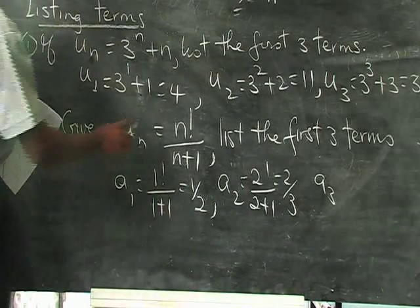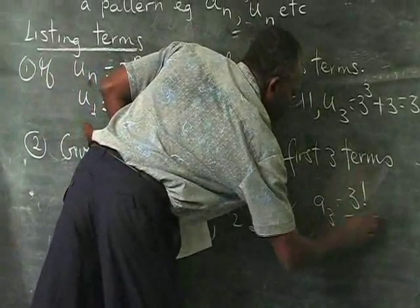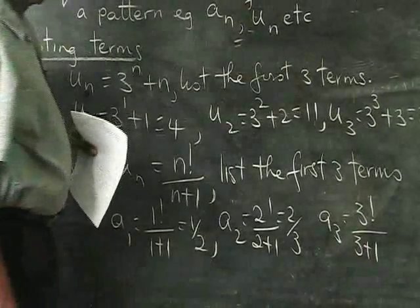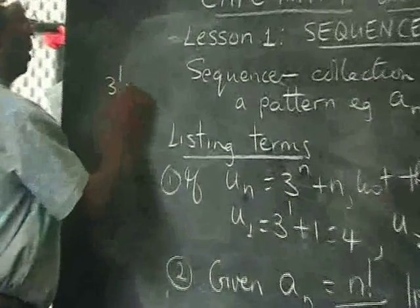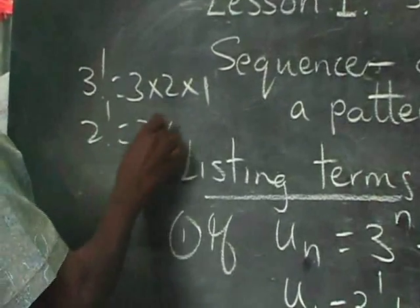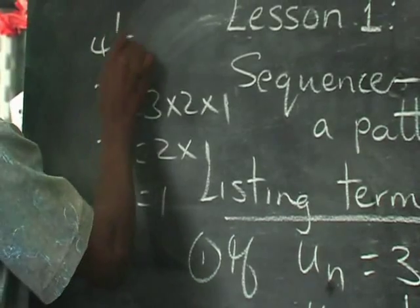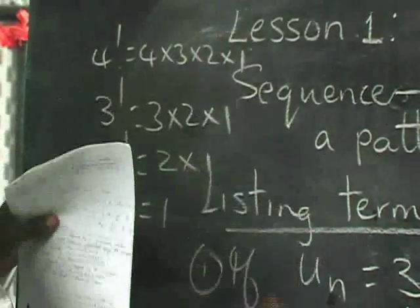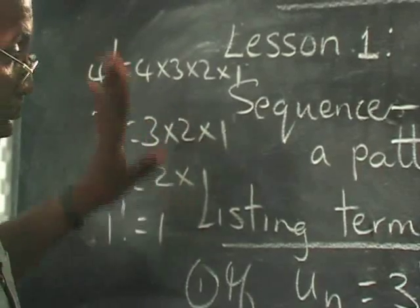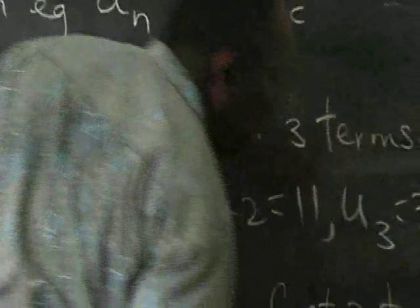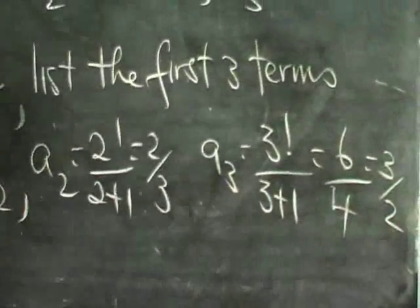Now we get to A3, which means N is now 3. So we have 3 factorial over 3 plus 1. Now 3 factorial is 6. And there is a way, if you don't have a calculator, of working out the factorial, because 3 factorial really means 3 times 2 times 1. 2 factorial is 2 times 1. And 1 factorial will just be 1. And 4 factorial will be 4 times 3 times 2 times 1. So it's really taking the number and reducing it by 1 until you get down to 1. So 3 factorial is actually 3 times 2 times 1, which is 6. But you can get that on your calculator. So we'll get 6 above, and below we get 4. And that will give you 3 over 2 if you cancel. And that's 1 and a half, 1.5.